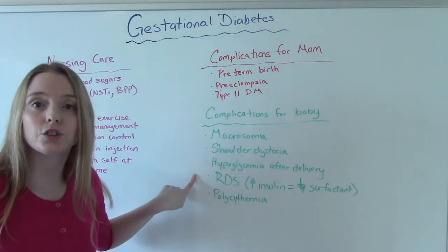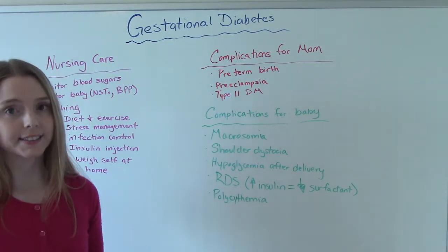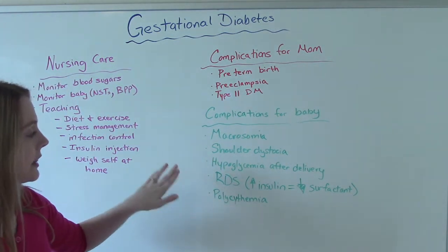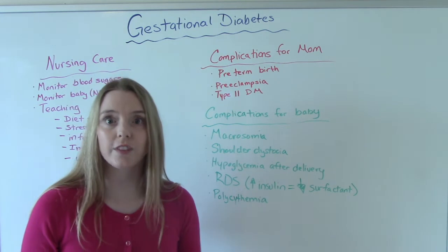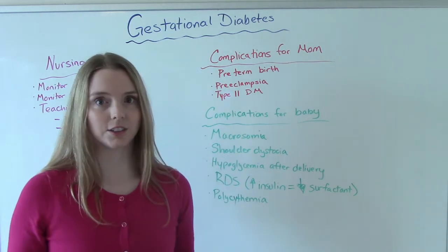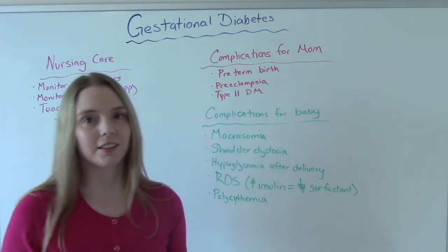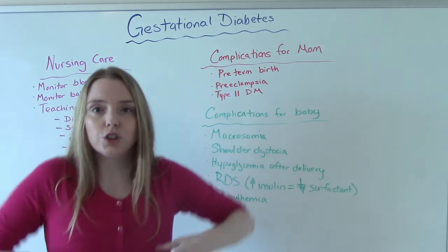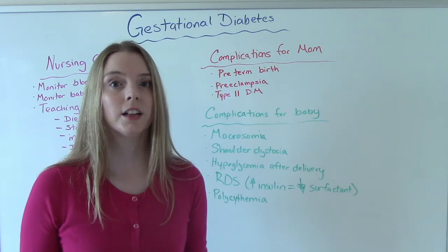RDS, which is respiratory distress syndrome, is huge too. The higher the insulin level in the infant — and remember they're used to making their own — the higher the insulin level, the decrease in surfactant production. Surfactant is needed to keep the alveoli from collapsing so babies can breathe and take in oxygen. So it's very important to monitor these babies not just for blood sugar things but also signs of respiratory distress: nasal flaring, retractions, pulling at their sides when they're breathing, having a hard time, increased respiratory rate — all that.